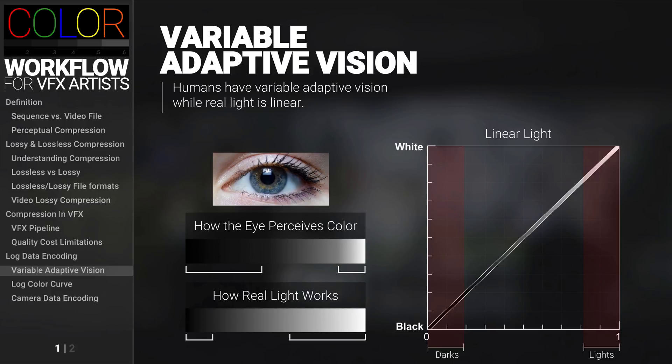So the question here is: should we capture image data that mimics real light, or should we capture it in a way that matches human perception of light? If we were to capture images linearly, then there would be a lot of wasted information on the curve up at the top, because humans can't see that area very well anyway.